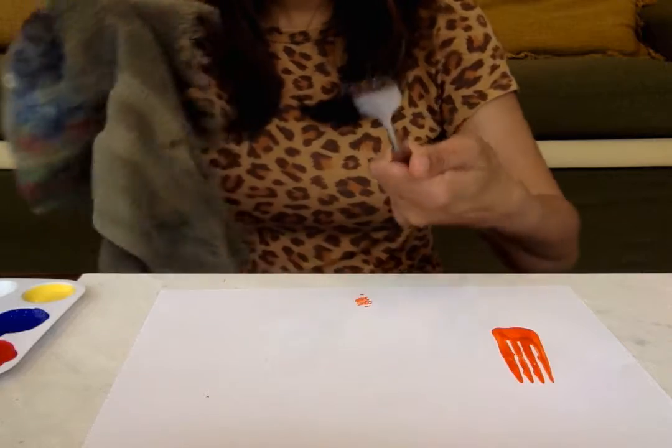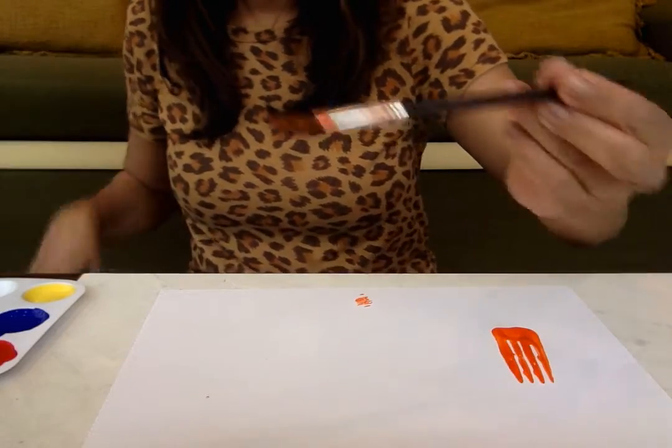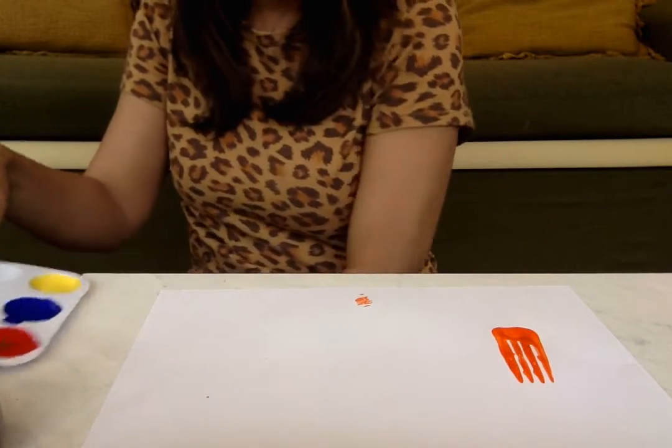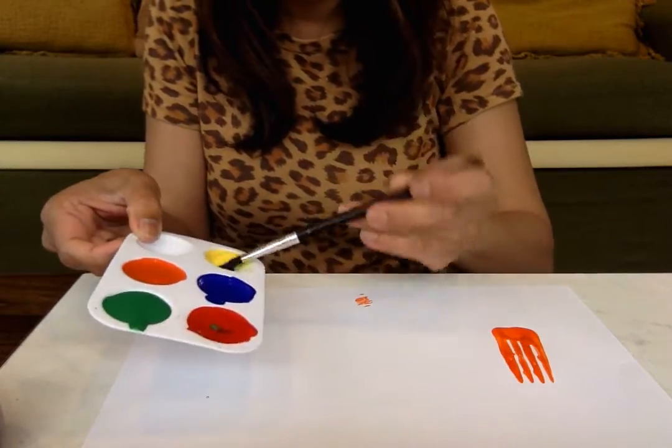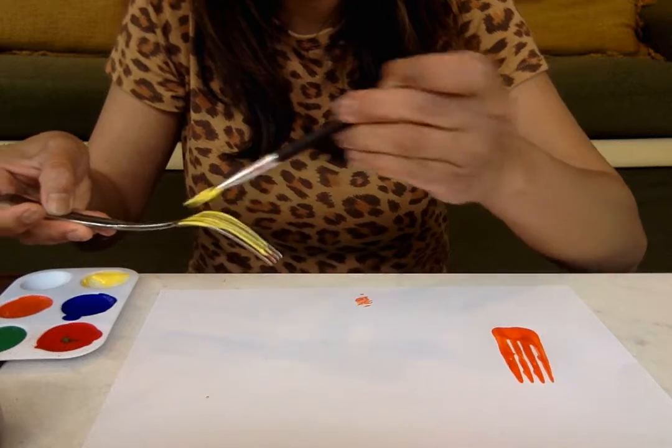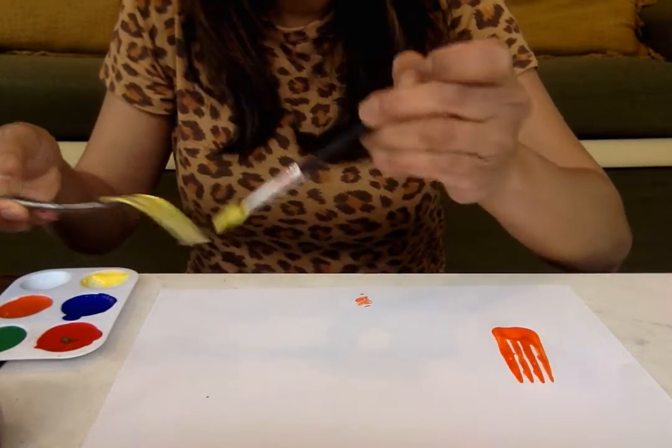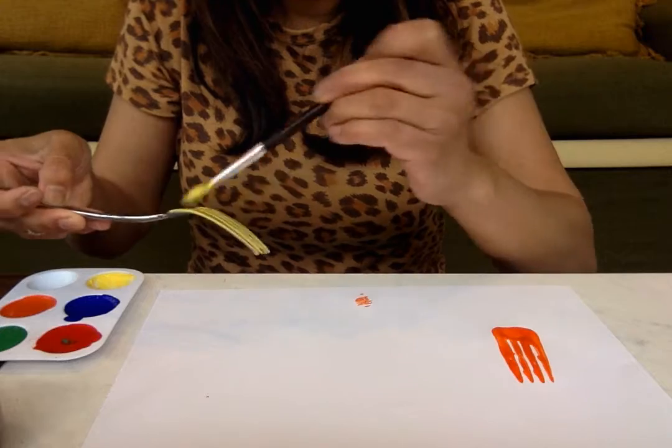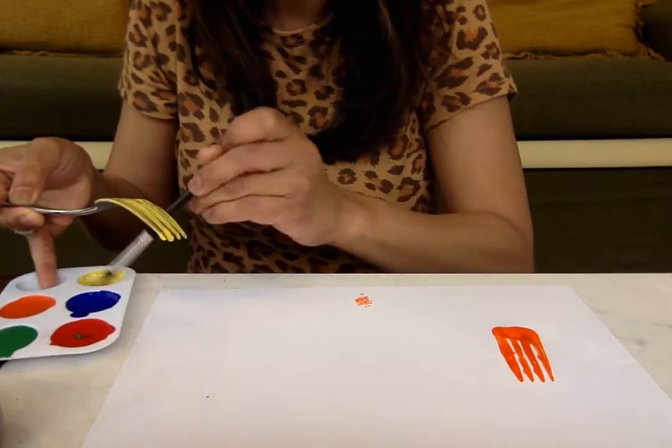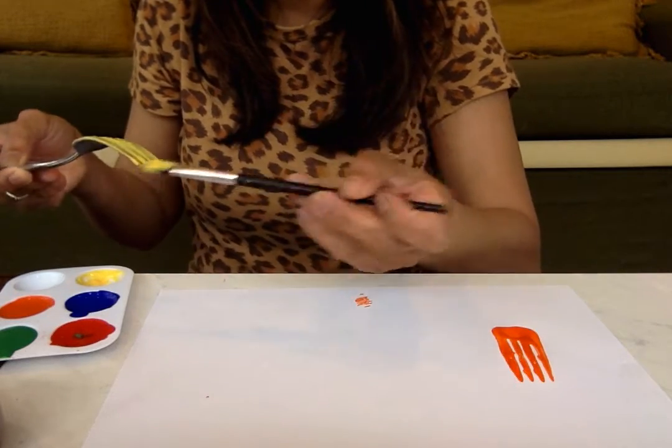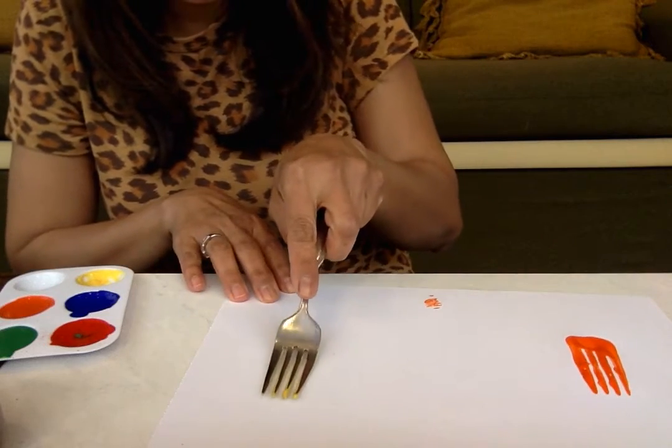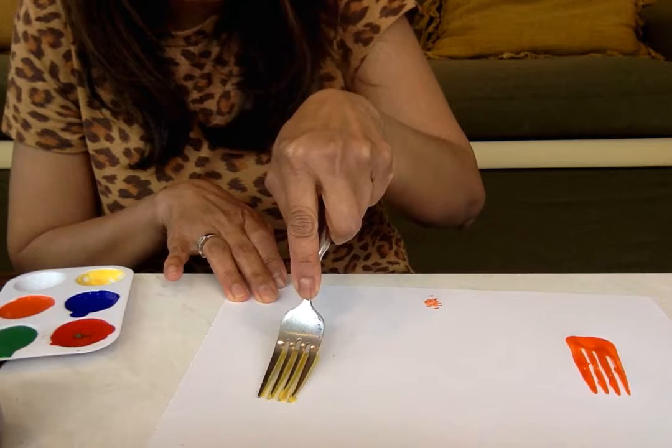I'm going to clean my fork and wash my brush so I can put another color on my fork. Let's put some yellow at the back. Remember, it's at the back of the fork. It's spring now and all the flowers are blooming. So pretty. Let's put it right here. Down and back and down and back.